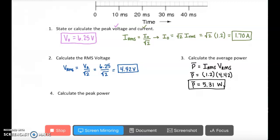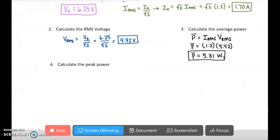Last but not least, in number 4, we are asked to calculate the peak power or the maximum power. Now I know that the peak power or the maximum power is going to be equal to my peak current and my peak voltage multiplied together.